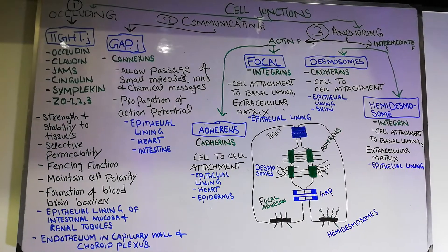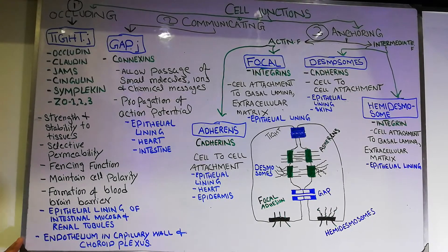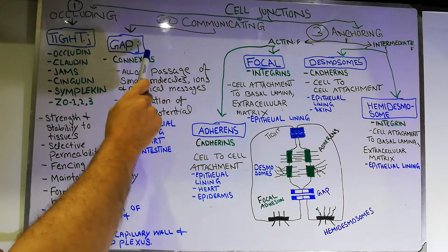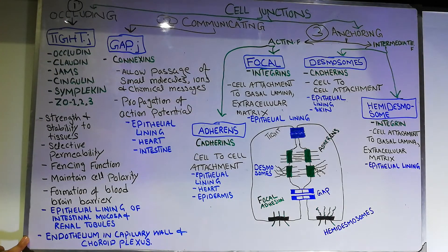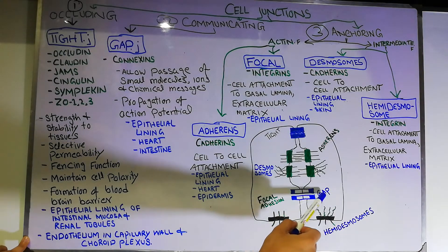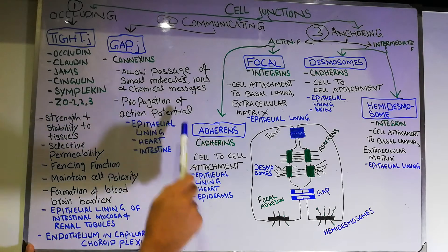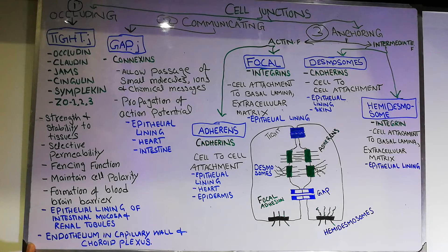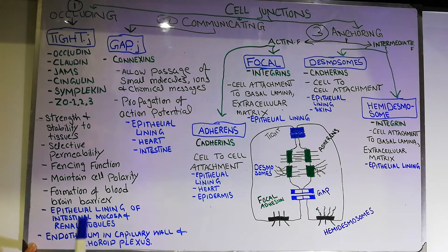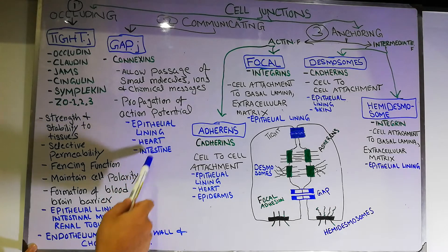After that, we have gap junctions. Gap junctions are made of protein connections and are an example of communicating junctions. Communicating junctions basically allow communication — they allow substances to move from one cell to another cell, which is why they are known as communicating junctions. Gap junctions also help in the propagation of action potential, which is basically an impulse like an electric current that moves from one cell to another with the help of these gap junctions. Examples of gap junctions are found in the epithelial lining of the heart and intestine.